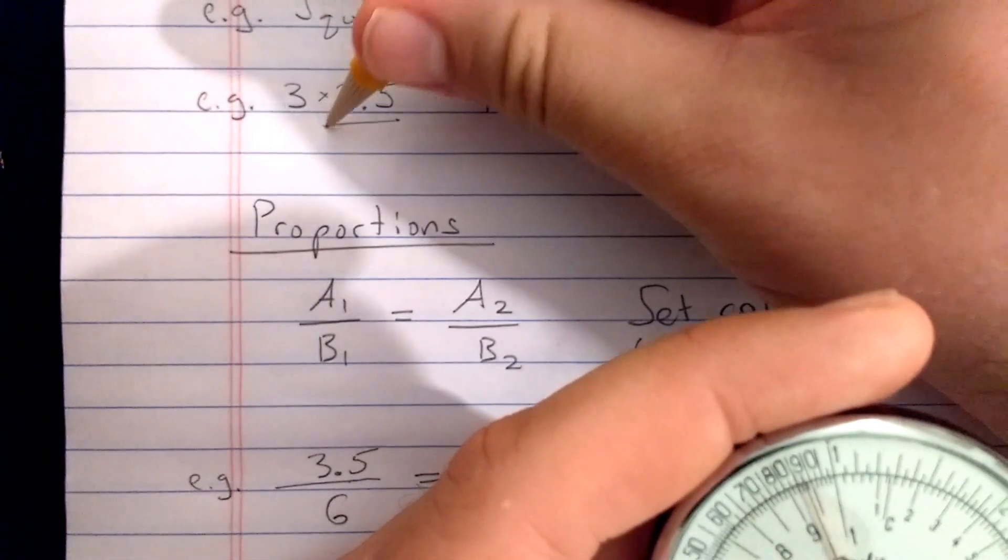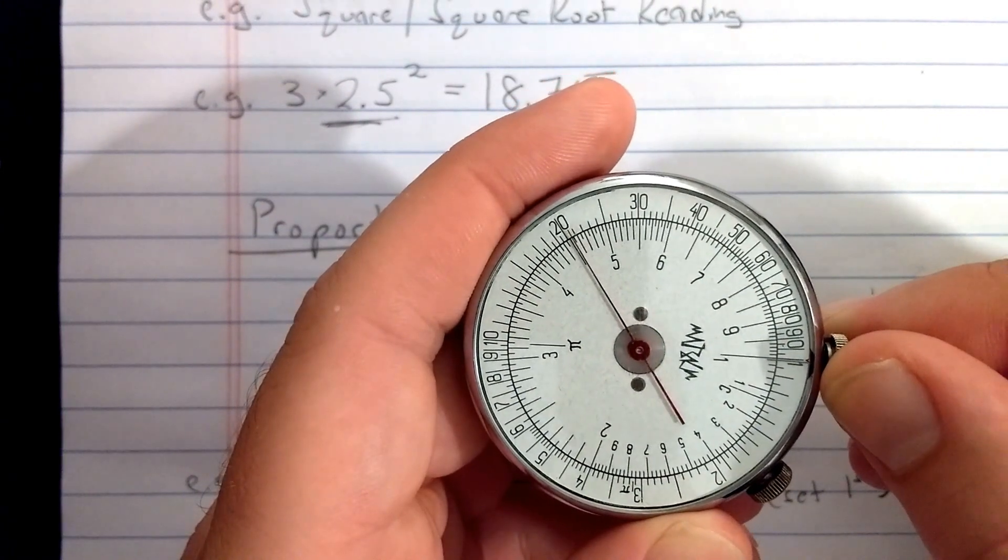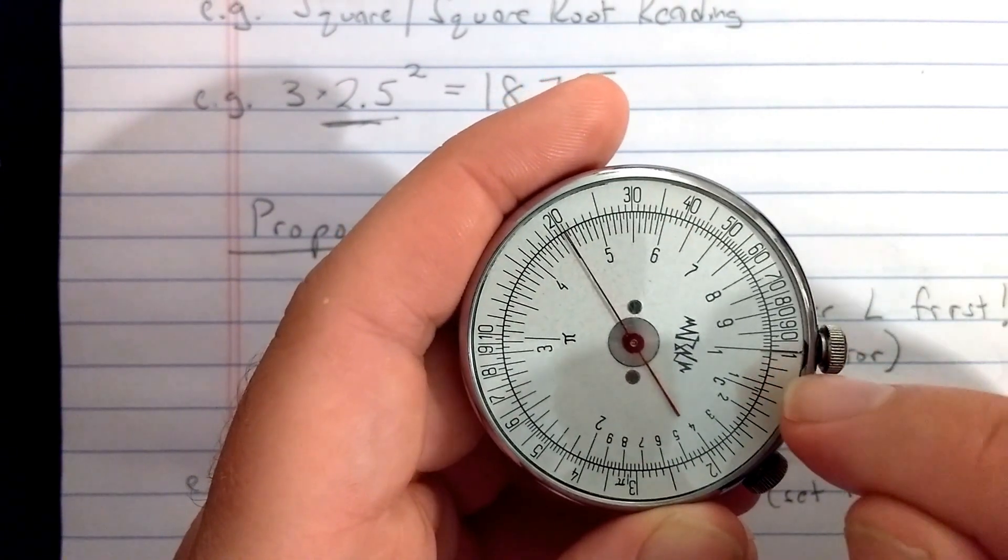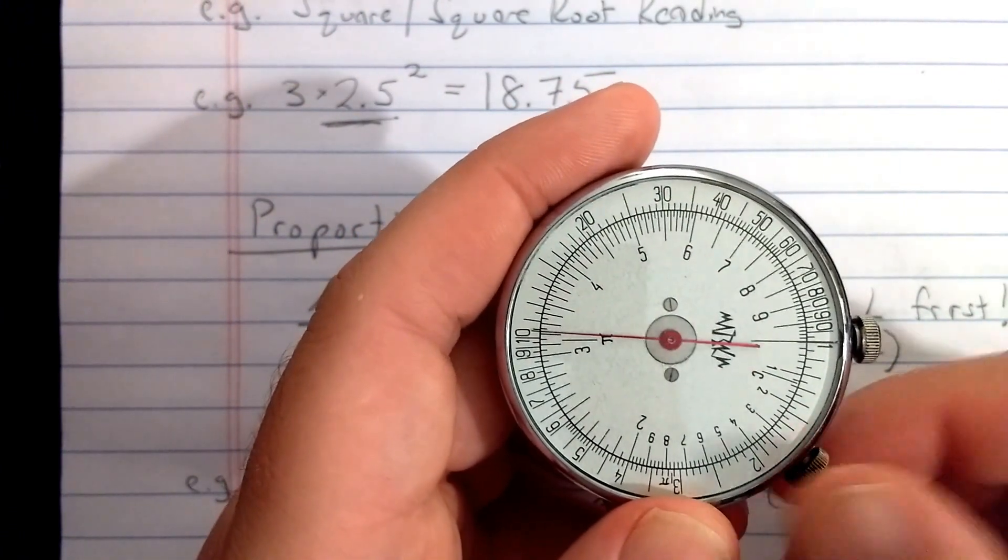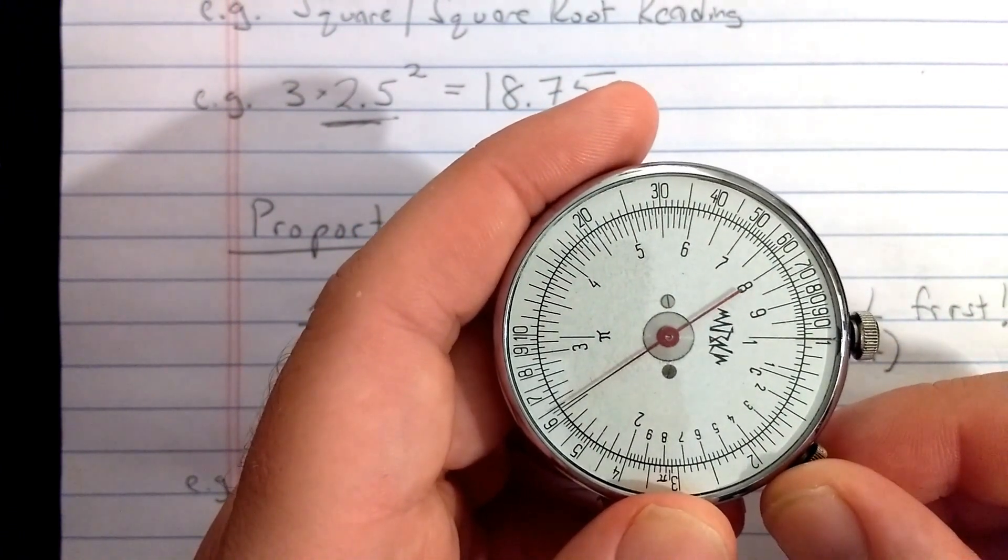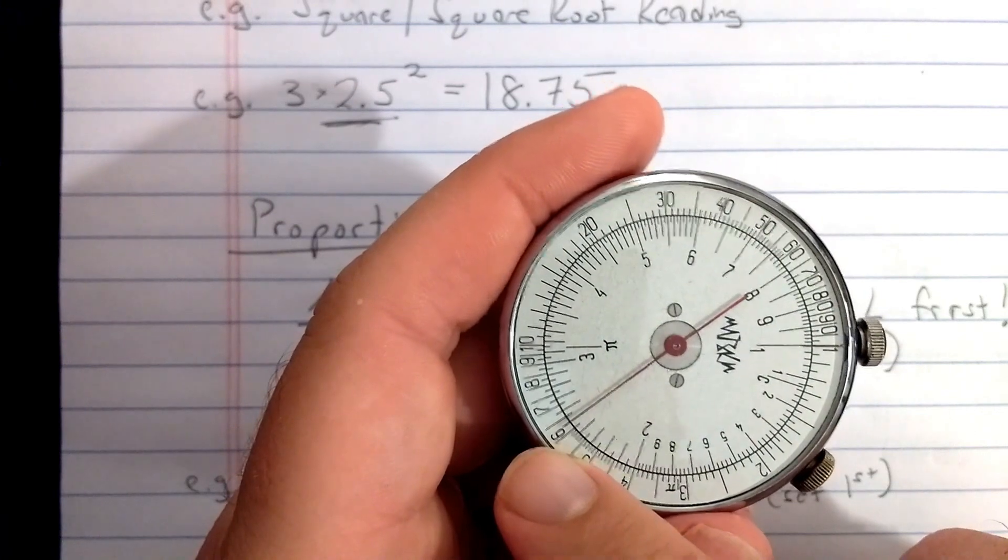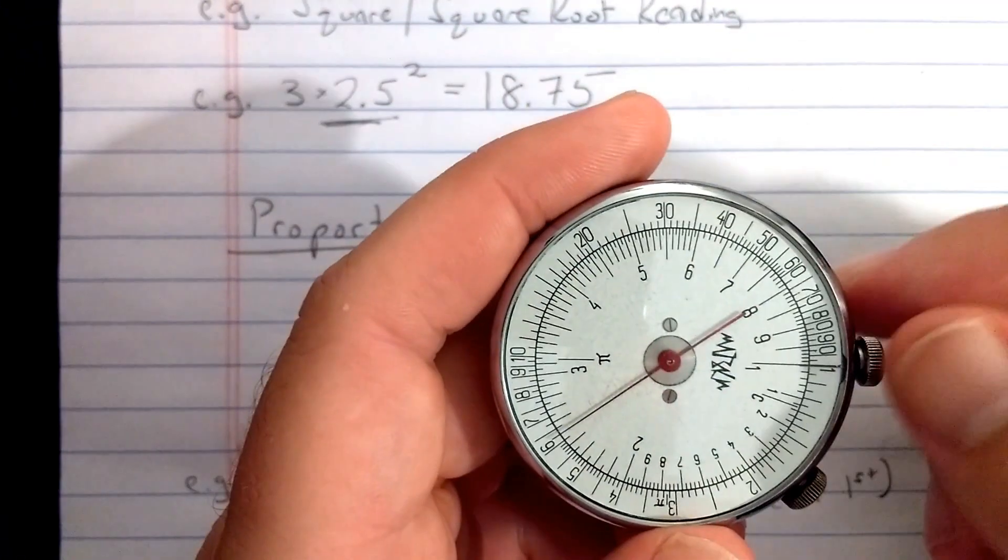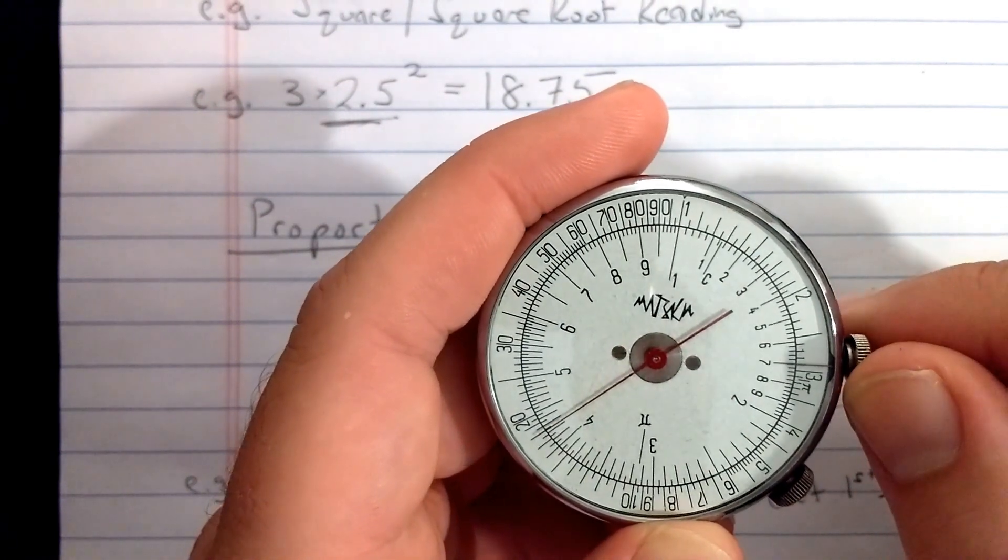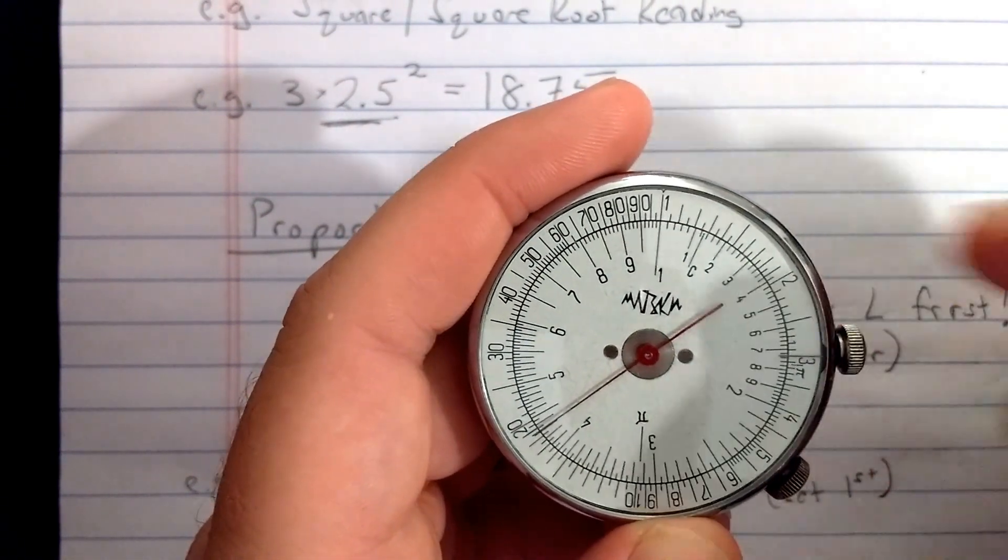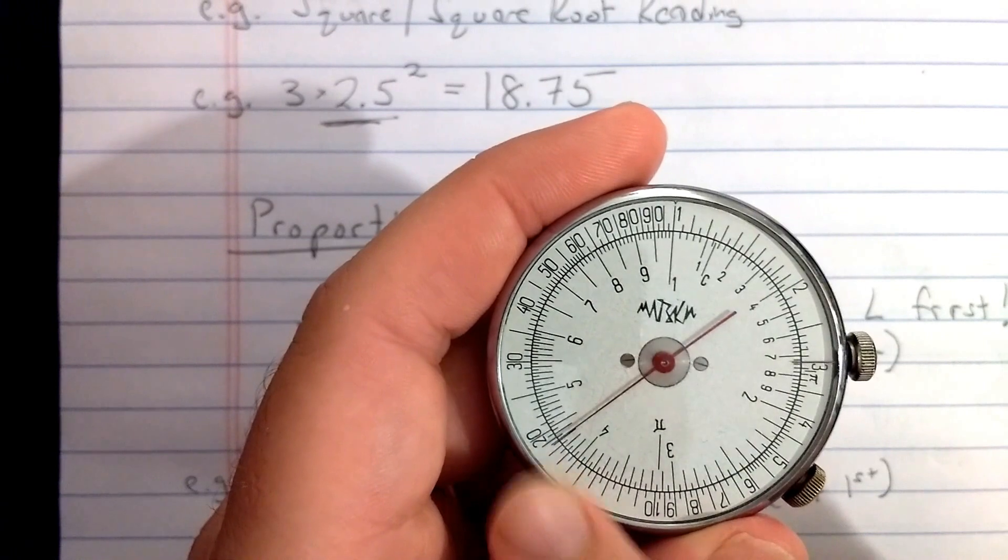So here I'm going to set operands 2.5 squared in the following way. First, I will align the indicator here, which aligns both the regular scale and the square scale. And then to get 2.5 squared, I'll find 2.5 on the regular scale. Then, of course, its square is reading on the square scale, the outer scale. So I'm going to do the actual operation on the outer scale by moving the indicator, the fixed indicator to 3 on the outer scale.